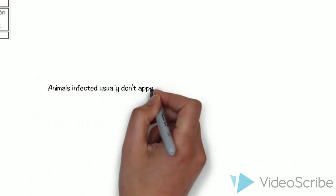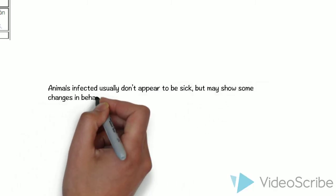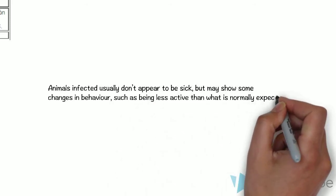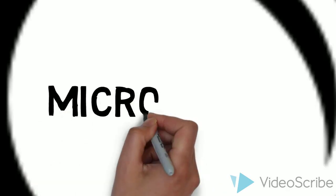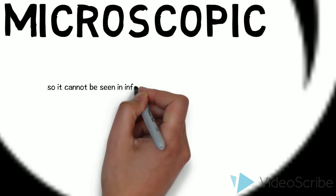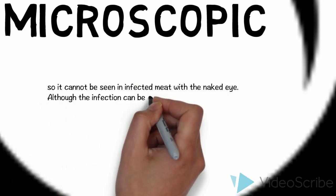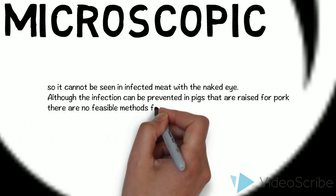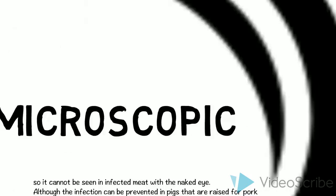It is also difficult to see if the animals are infected, as usually they don't appear to be sick, though they may show some changes of behavior, such as being less active than what is normally expected. The parasite is microscopic, so it cannot be seen in infected meat with naked eye. Although the infection can be prevented in pigs that are raised for pork, there are no feasible methods of reducing Trichinella in wild animals.